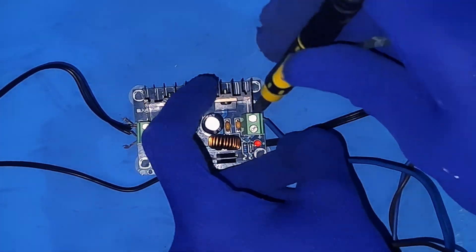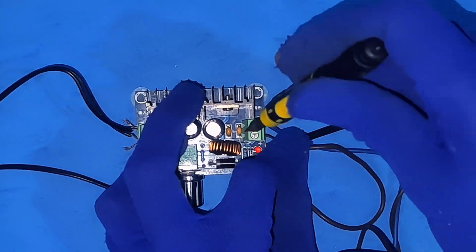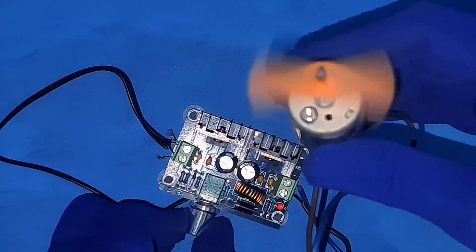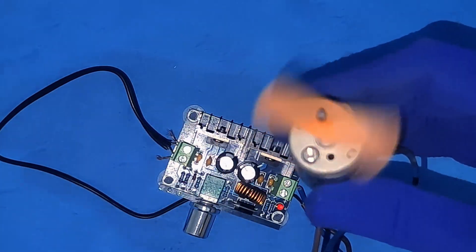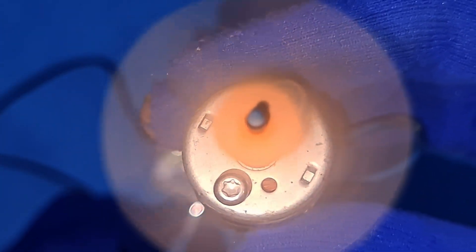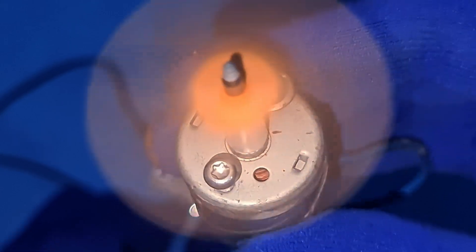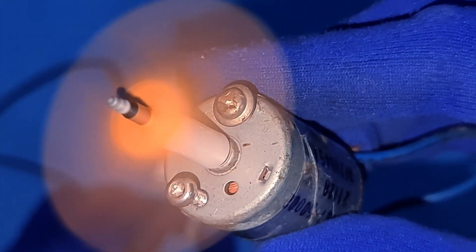To demonstrate its capabilities, I connected a DC motor. Notice this paper attached to the motor rod. This helps visualize the speed. Starting at zero, I slowly increased the voltage. The motor's speed increased smoothly, proving this module works great as a simple DC motor speed controller.